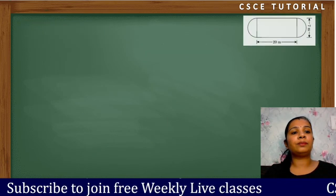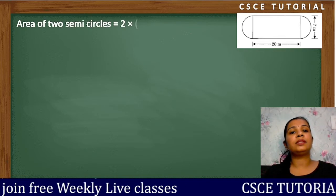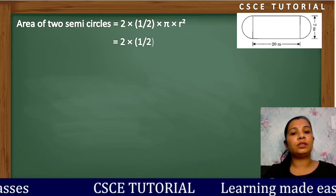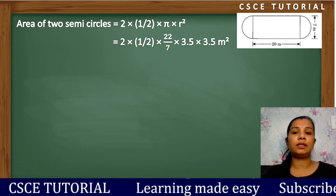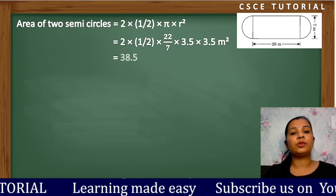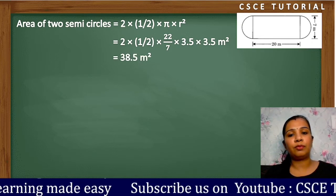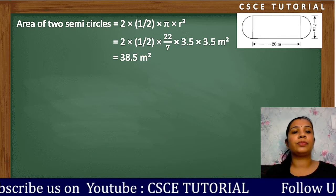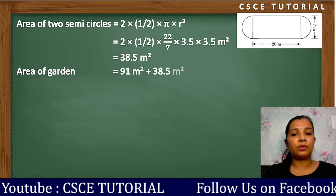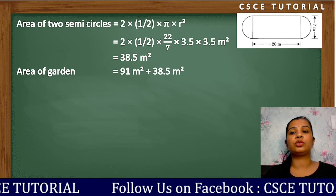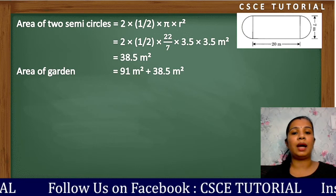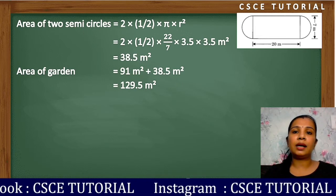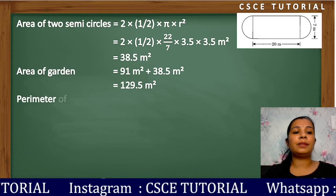Area of two semicircles = 2 × (1/2) × π × r² = 2 × (1/2) × (22/7) × 3.5 × 3.5. Solving this, the 2 and half cancel, and 7 and 3.5 simplify to 0.5, giving 38.5 square meters. Total area of the garden = 91 + 38.5 = 129.5 square meters.